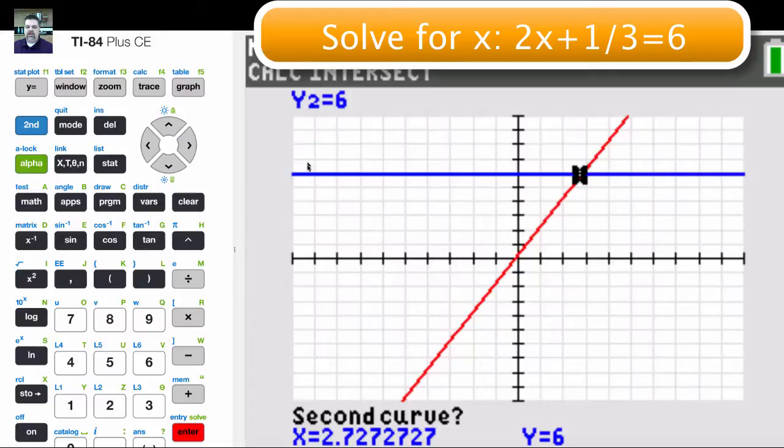Now we've switched to the blue line, y2 equals 6. Hit enter. Hit enter again. And it says that it crosses at about 2.83 repeating. That's the solution.